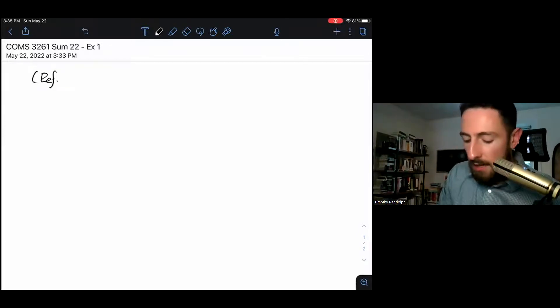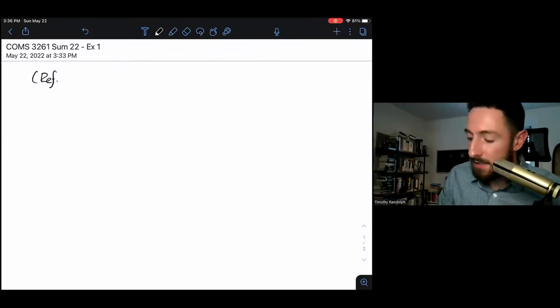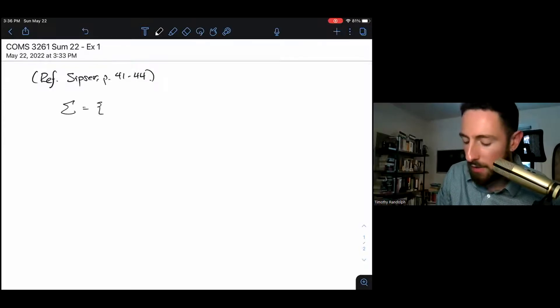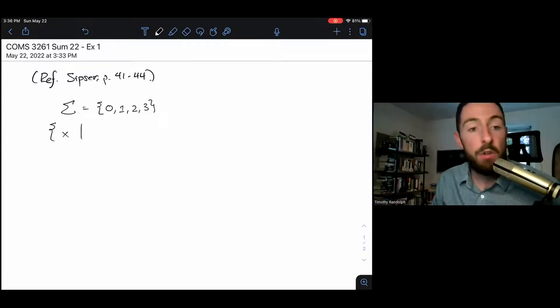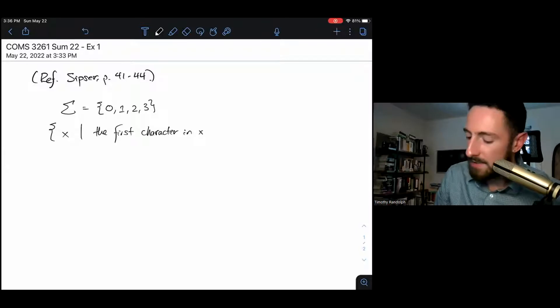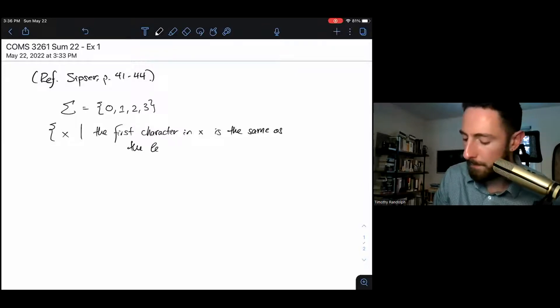Unfortunately this is a little bit like designing a program. There's no obvious procedure for how you do the design, but I'm going to try to walk you through one example and give you ideas of my thought process. A good reference for this video and another introduction to designing DFAs is in Sipser pages 41 through 44. Let's consider a language over the alphabet sigma equals {0, 1, 2, 3}. The language is all strings x such that the first character in x is the same as the length of the string x.